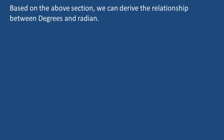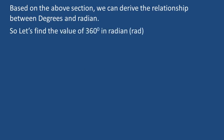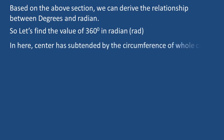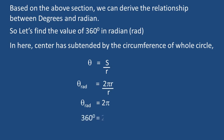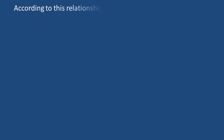Based on the above, we can derive the relationship between degrees and the radian. Let us find the value of 360 degrees in radian. The angle subtended at the center by the circumference of the whole circle: theta = S/R = 2πR/R, so theta = 2π radian. Therefore, 360 degrees equals 2π radian.